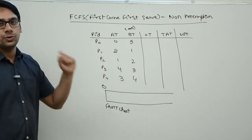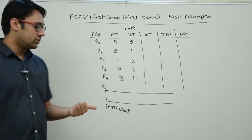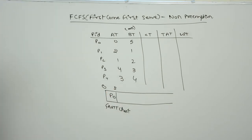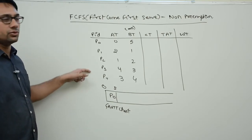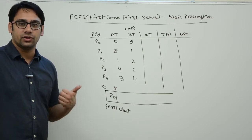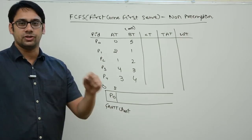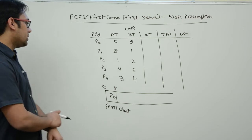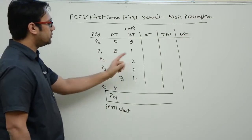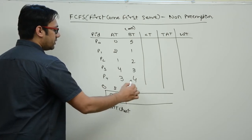At time 0, P0 arrives and the CPU is available, so we allocate the CPU to P0. It executes from time 0 to time 5. After that, we allocate CPU according to arrival time — whichever process arrived first gets the CPU first. The next process to get the CPU is P2, since it arrived before P1.